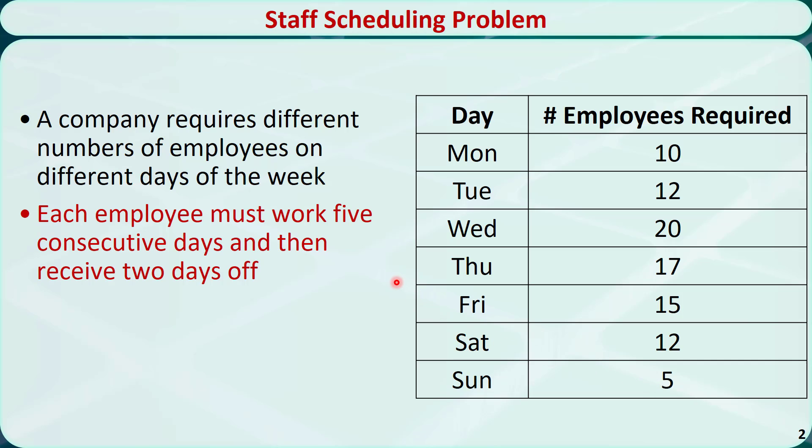Each employee must work 5 consecutive days and then receive 2 days off. For example, an employee who works on Monday through Friday must be off on Saturday and Sunday. An employee who works on Saturday through Wednesday must be off on Thursday and Friday.